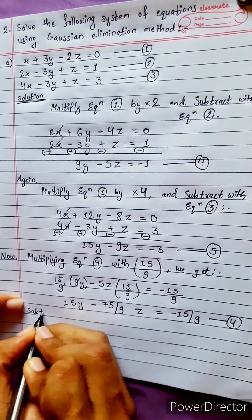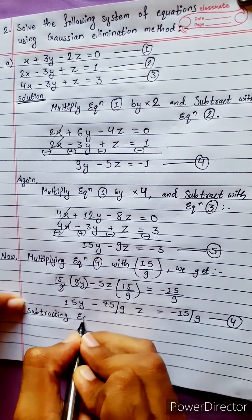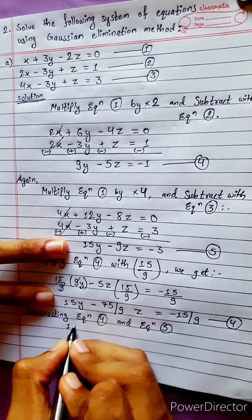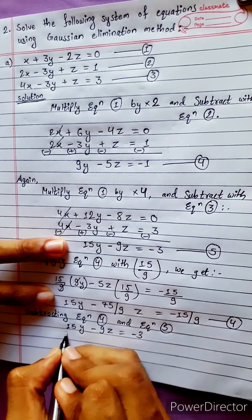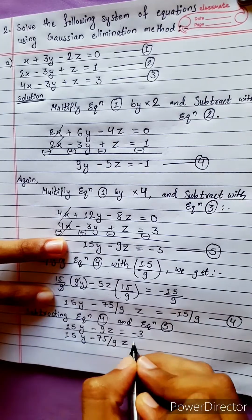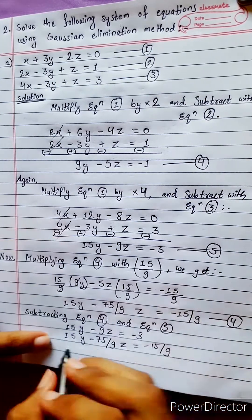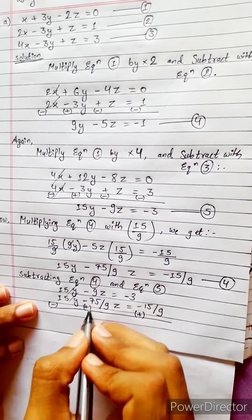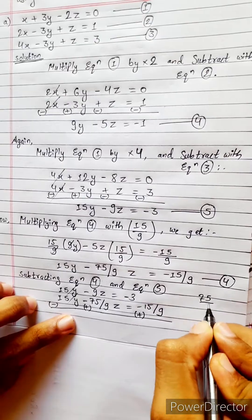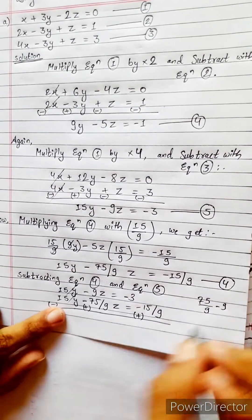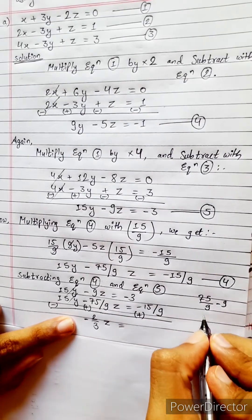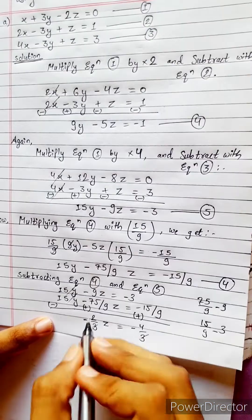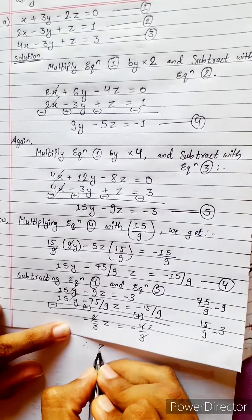Subtracting new equation 4 from equation 5: 15y - 9z = -3 minus 15y - (75/9)z = -15/9. The 15y terms cancel. Using the calculator: (75/9) - 9 gives -2/3 z, and -15/9 - (-3) gives -4/3. The 3s cancel: 2z = 4, therefore z = 2.